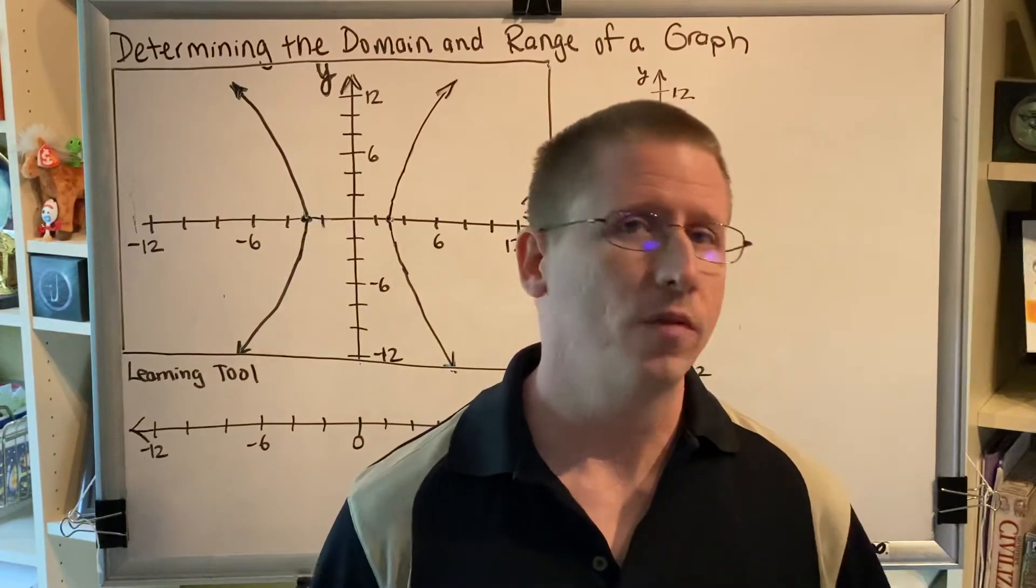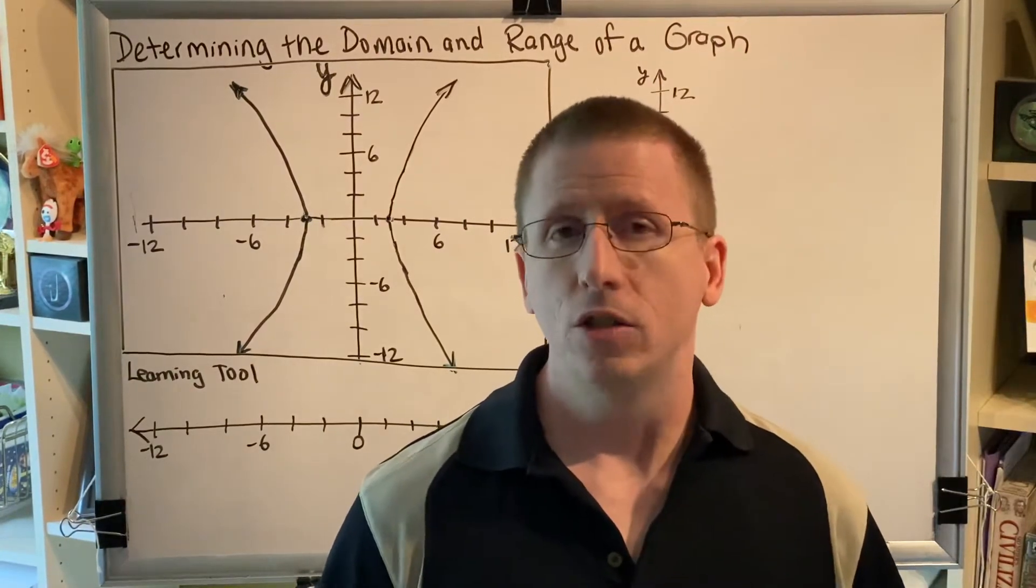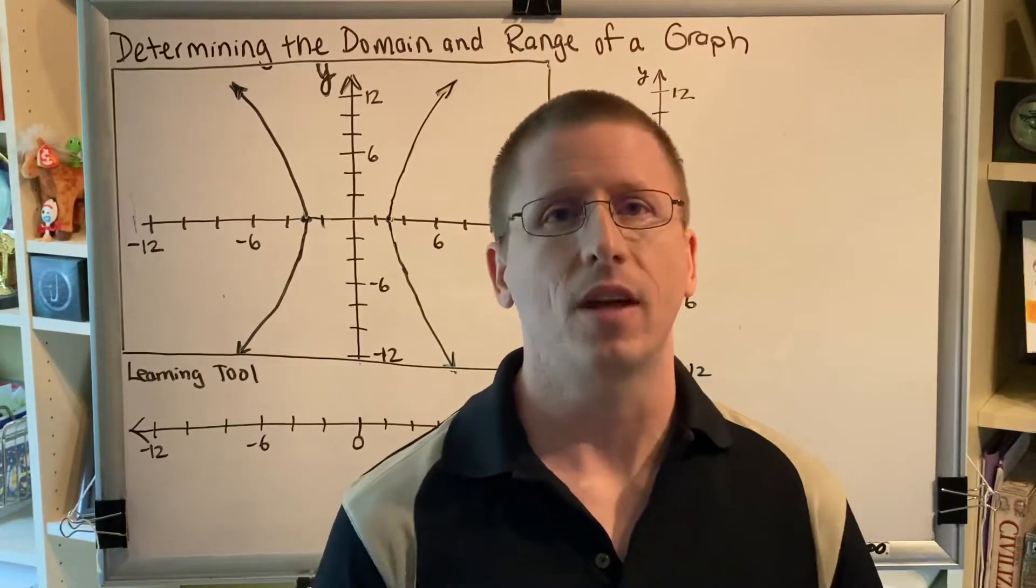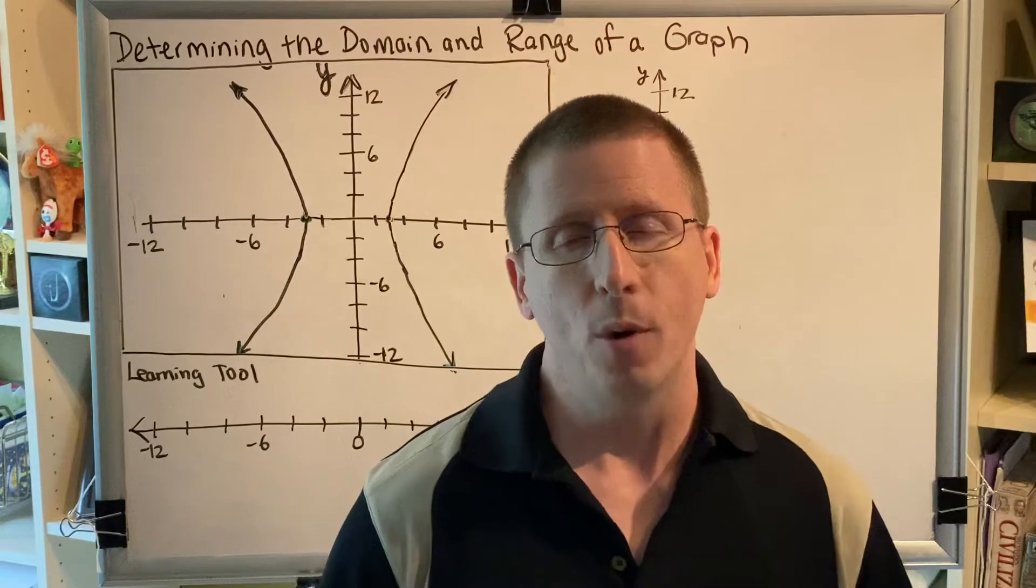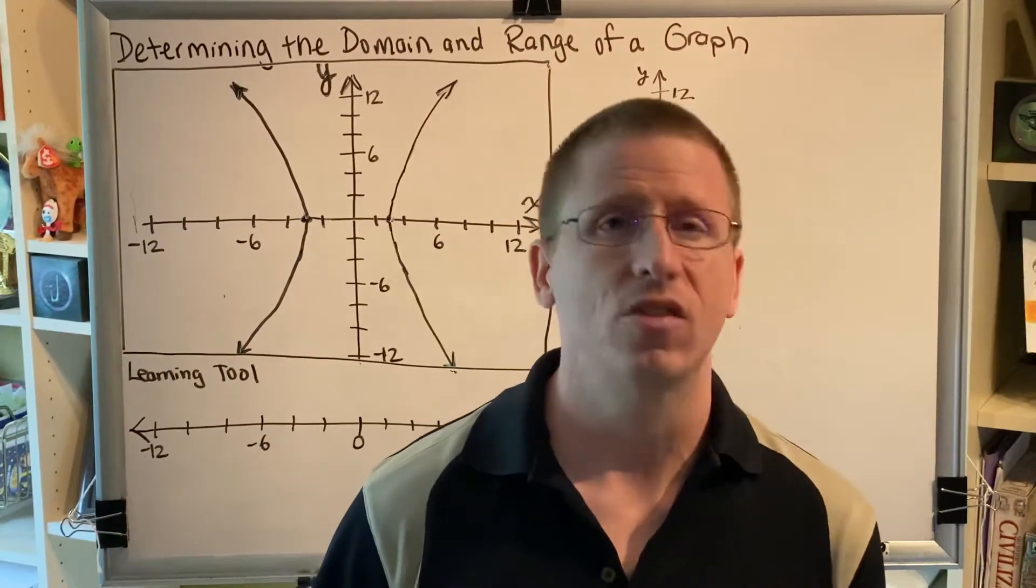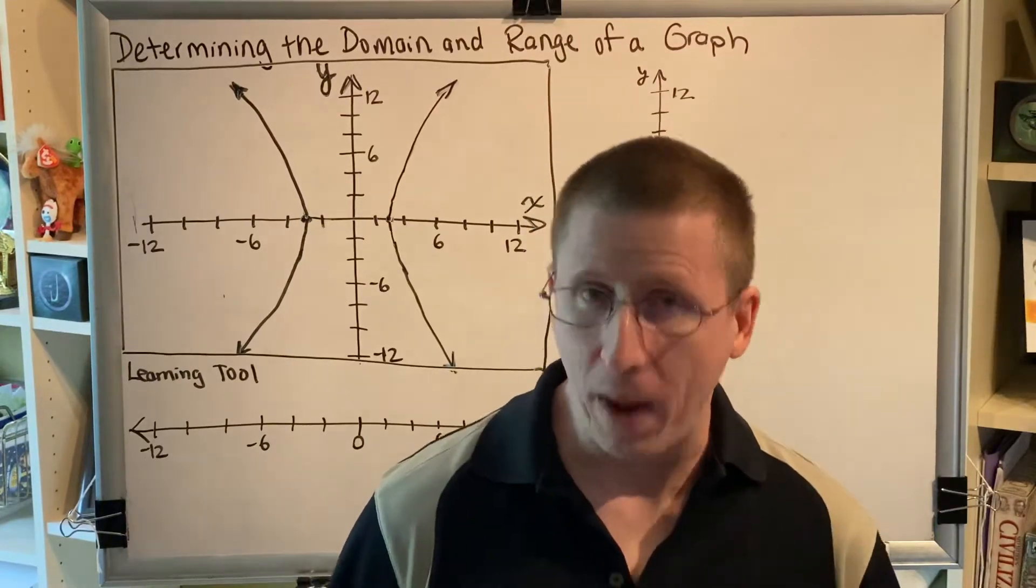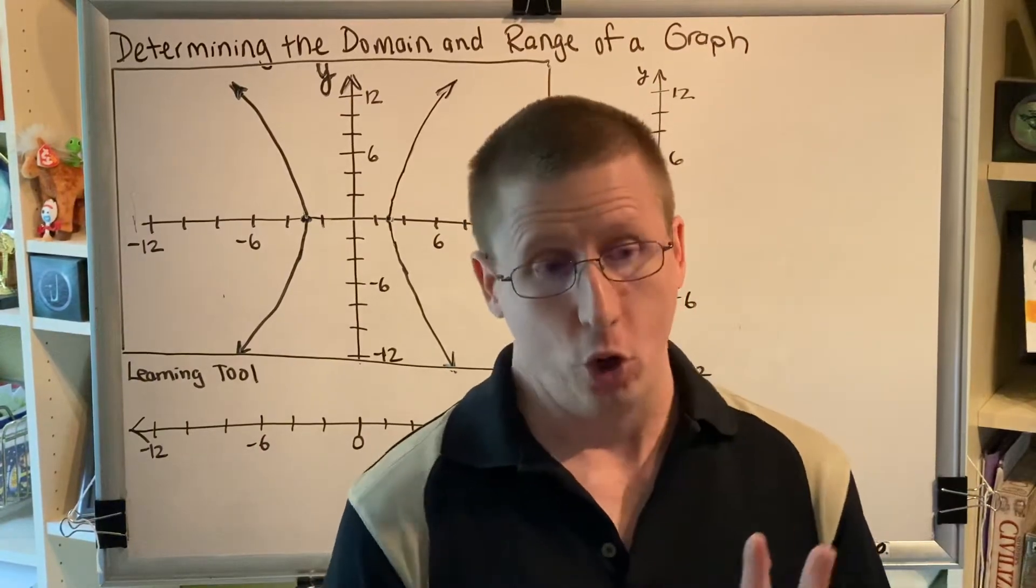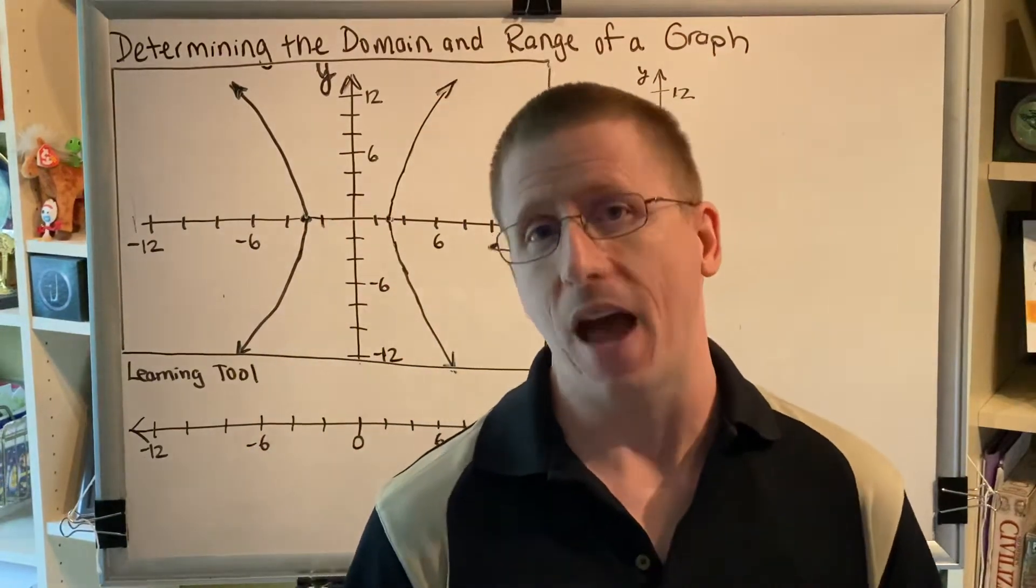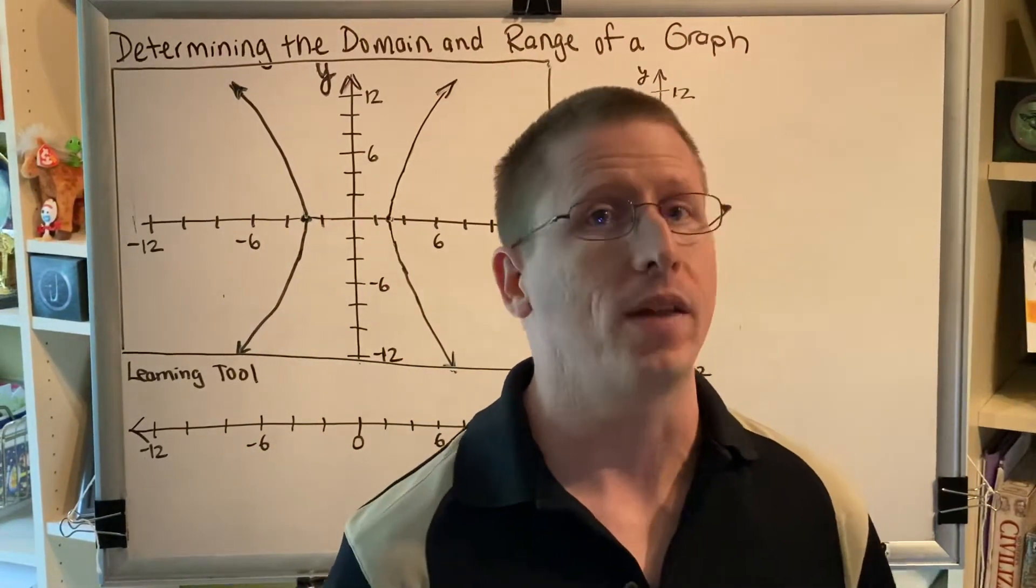Let's remind ourselves of a couple of definitions first. Domain is the collection of all of the real number inputs that give us real number outputs. The most important word there is inputs. Domain is a collection of the inputs, which for an ordered pair would be the x-coordinate, which means for a graph it would be a collection of all of the x-coordinates of all of the points on the graph.